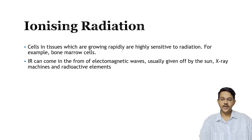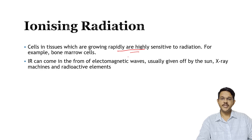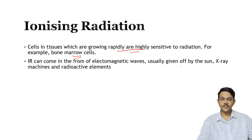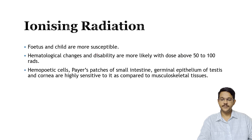Cells in tissues which are growing rapidly are highly sensitive to radiation, since DNA at the time of cell multiplication is split up, making these cells very susceptible. Bone marrow cells are particularly susceptible to radiation exposure. Fetuses and children are also more susceptible since they are in a growing stage where cells are in multiple stages of division.